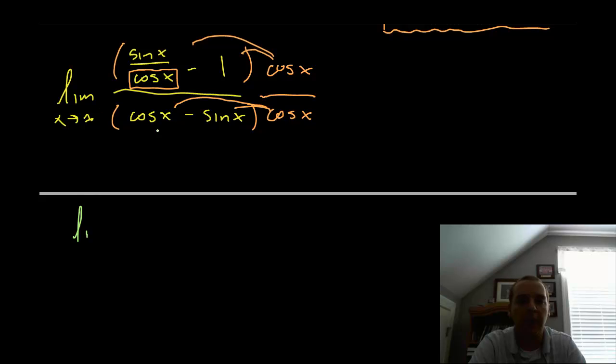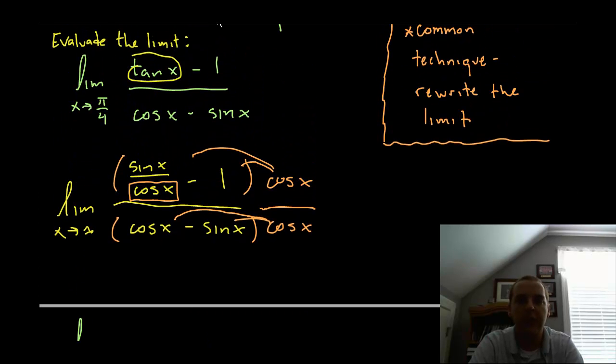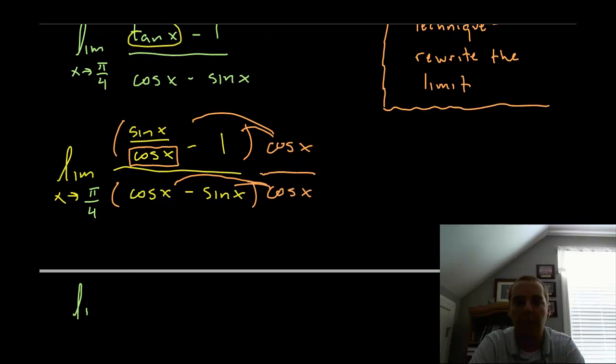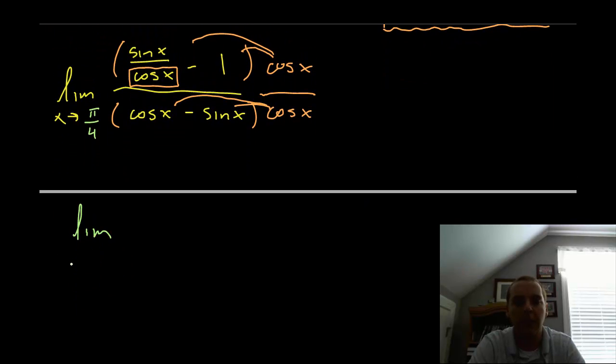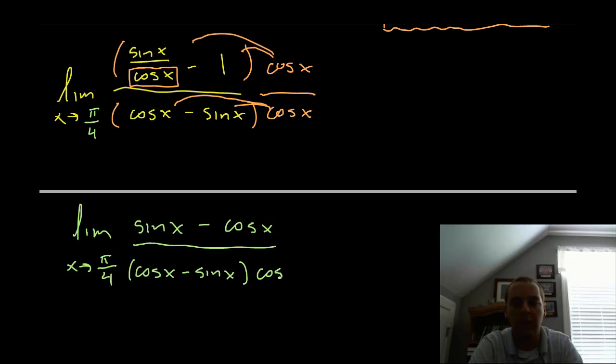This would lead to the limit - and I made a typo, I just noticed that. It's not the limit as x approaches infinity, it should be pi over 4. The limit as x approaches pi over 4 for sine x divided by cosine x times cosine x. The cosines will cancel, and we'll get sine x minus 1 times cosine x, that's cosine x, divided by - and I'm not going to distribute the denominator, I'm going to leave it in factored form because I noticed something here.